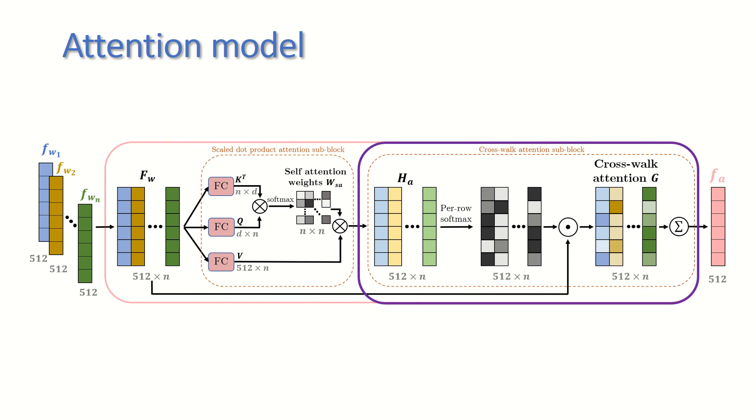The cross-walk attention sub-block aggregates the walk features into a single mesh feature vector, F_A. This is done by giving H_A, in which each entry indicates the importance of that entry, a probabilistic interpretation. These probabilities are multiplied element-wise by the walk feature vectors to create the weighted cross-walk attention feature in matrix G. Finally, the columns of the cross-walk attention matrix are summed, creating the sought-after mesh feature vector, F_A.